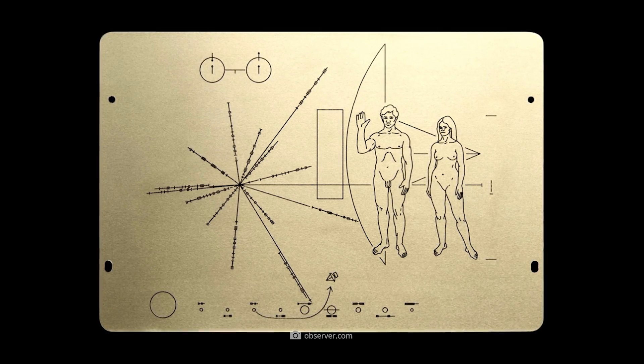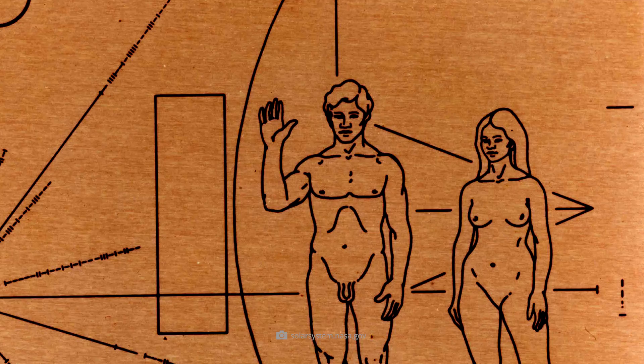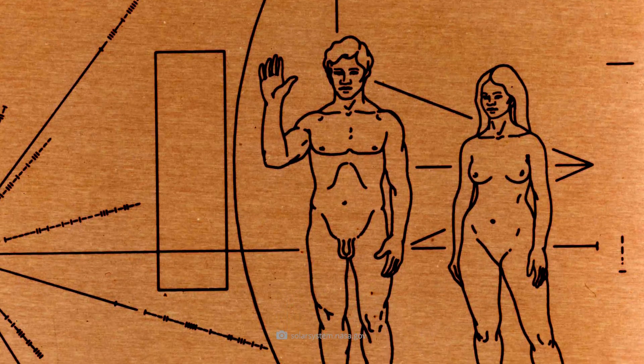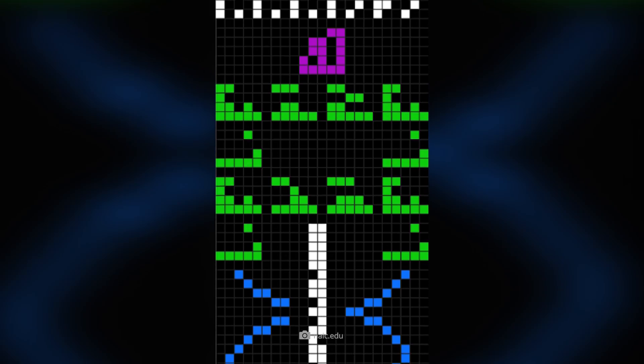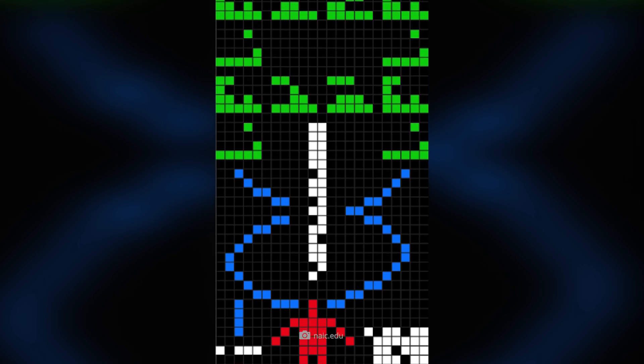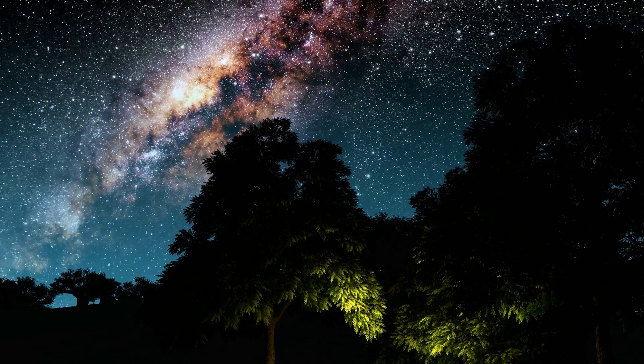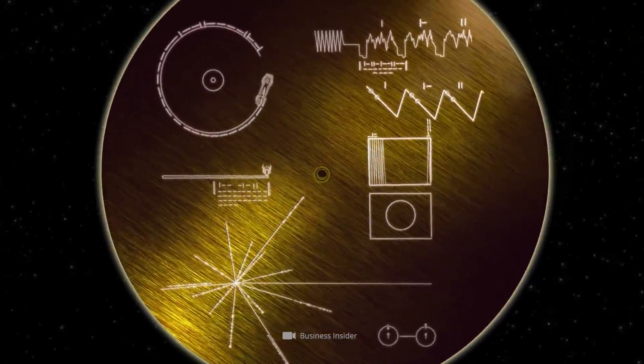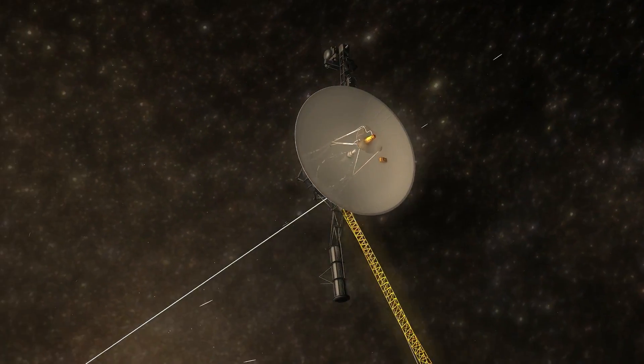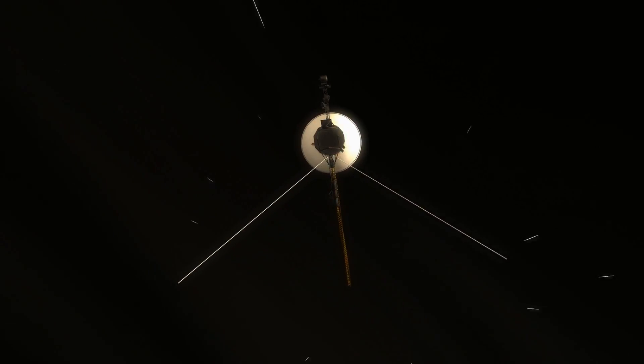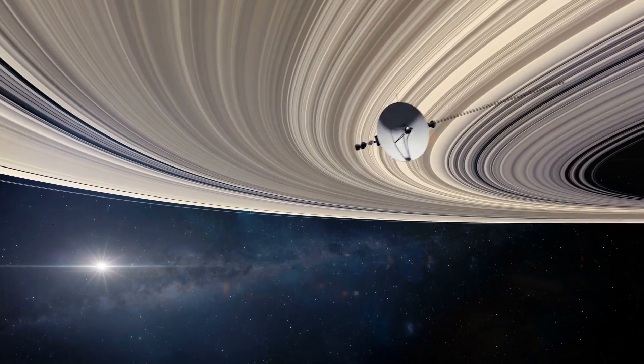The so-called pioneer plaques are to be mentioned here above all, which provide among other things the picture of a man and a woman. The Arecibo message, a message in the form of a cryptically packed radio wave signal, belongs to the most famous contact attempts between mankind and extraterrestrial intelligences. And the data disks provided with picture and audio information, which were attached to the space probes Voyager 1 and Voyager 2, pursued this purpose as well.